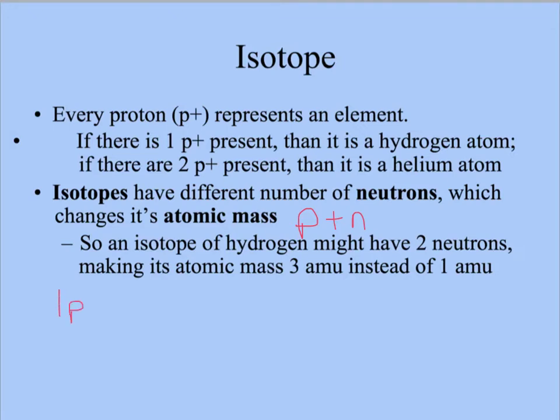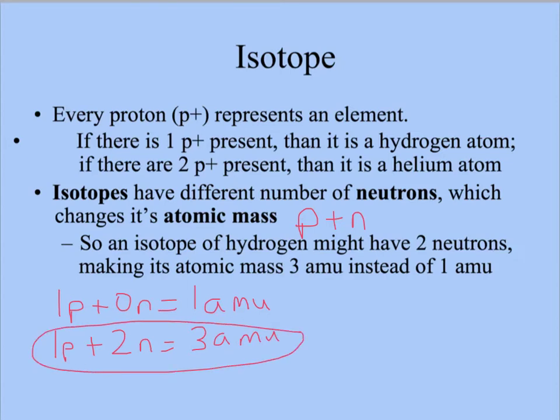Hydrogen has one proton and zero neutrons. This gives us an atomic mass of one AMU. AMU stands for atomic mass unit. An isotope of hydrogen has one proton and two neutrons. This gives us an atomic mass of three. Therefore, this is an isotope because its atomic mass is greater than the average hydrogen atom.